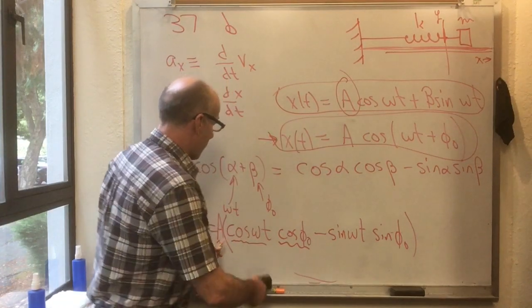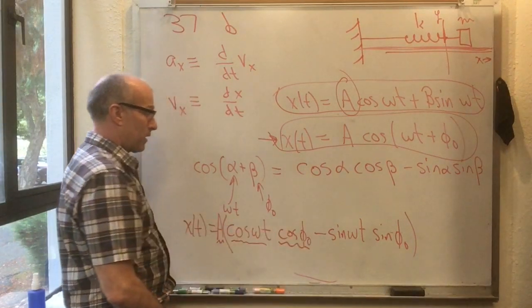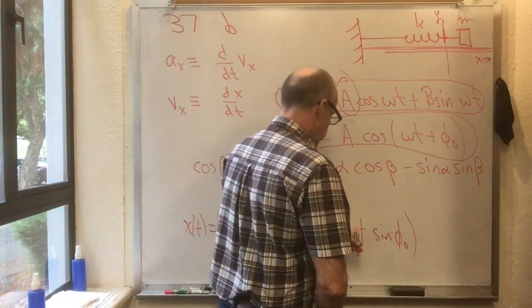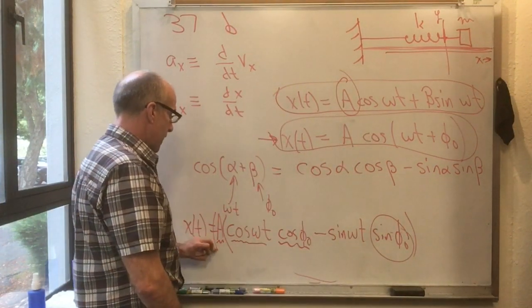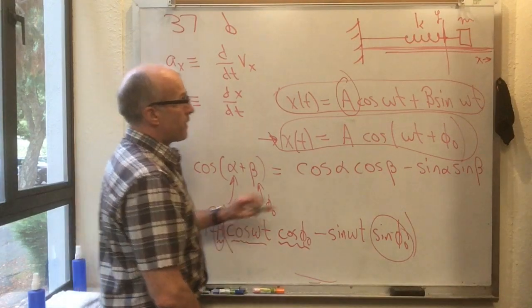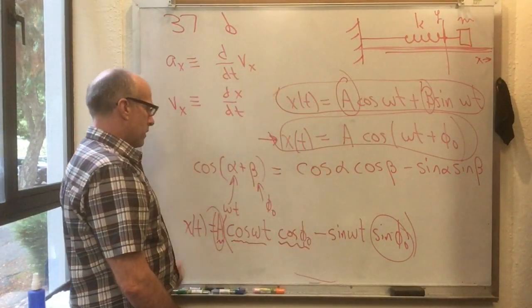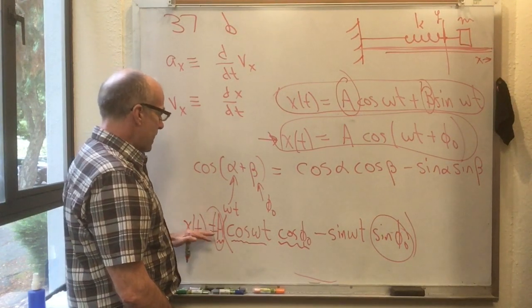And meanwhile, this thing right here, this sine phi naught times that a, that could play the role of b. So basically you can make any, you can use this guess that x of t is equal to A cos omega t plus phi naught to make any kind of guess like this and vice versa.